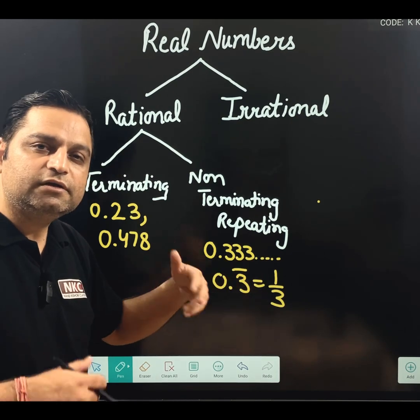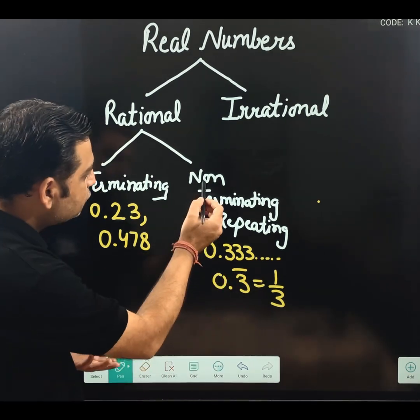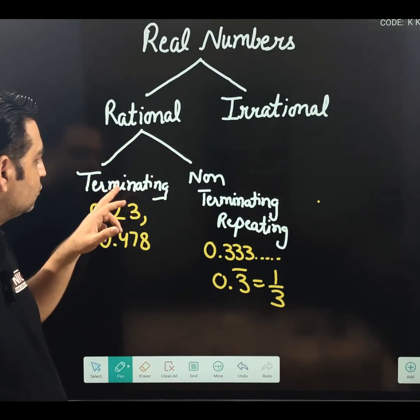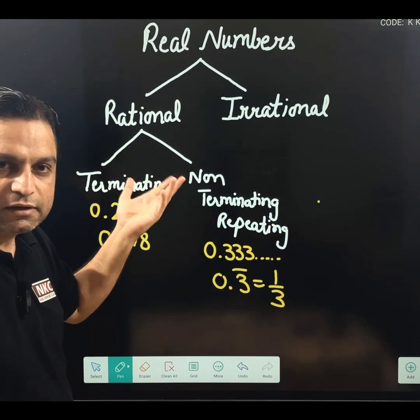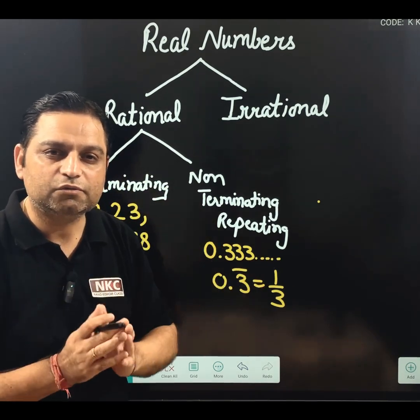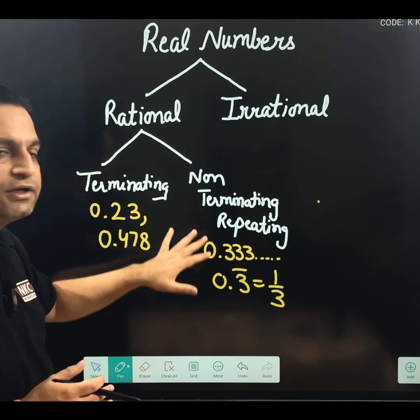You can divide 1 by 3, you will get this answer. So, that means, 1 over 3 is P by Q form. So, those which are non-terminating repeating, they are also rational. Those which are terminating, obviously, they are rational. And 1, 2, 3, 4, 5, 6, as I told you earlier. I hope you are clear with the rational chart.